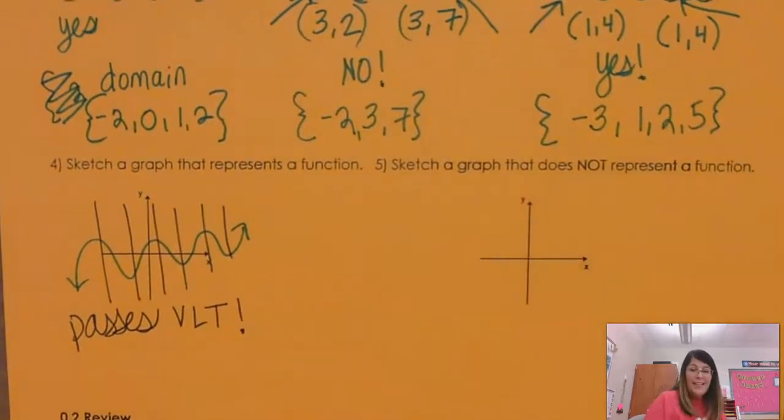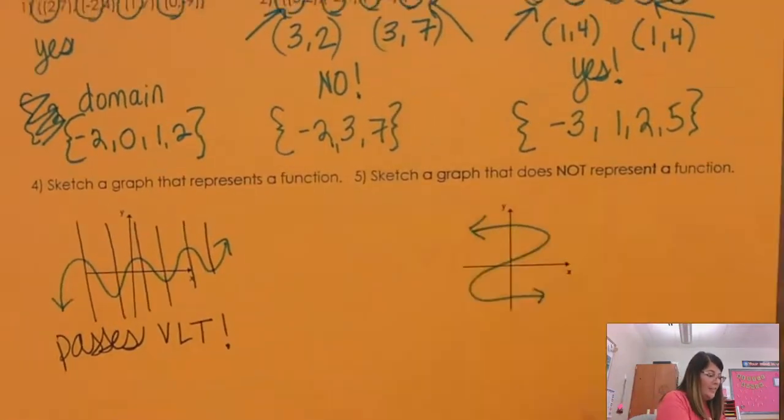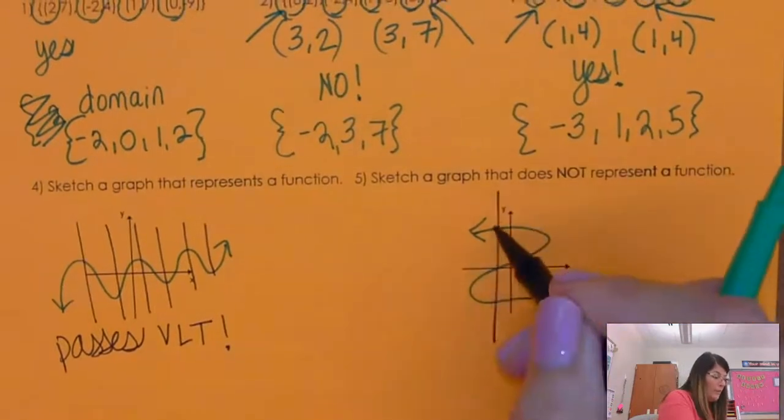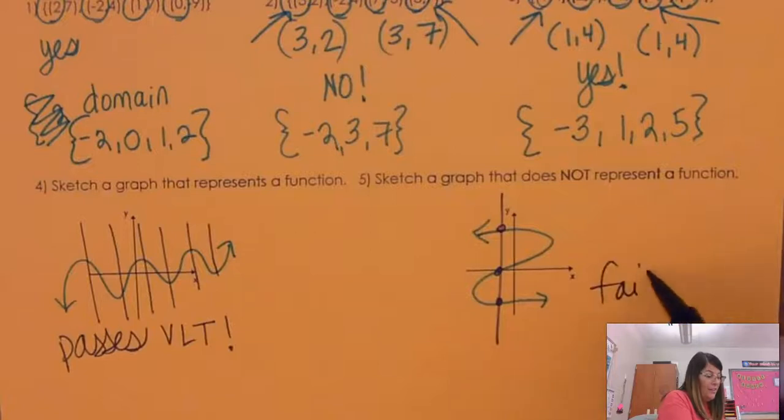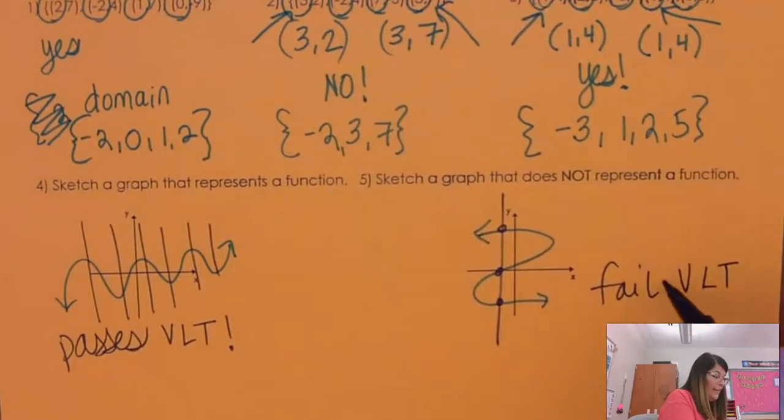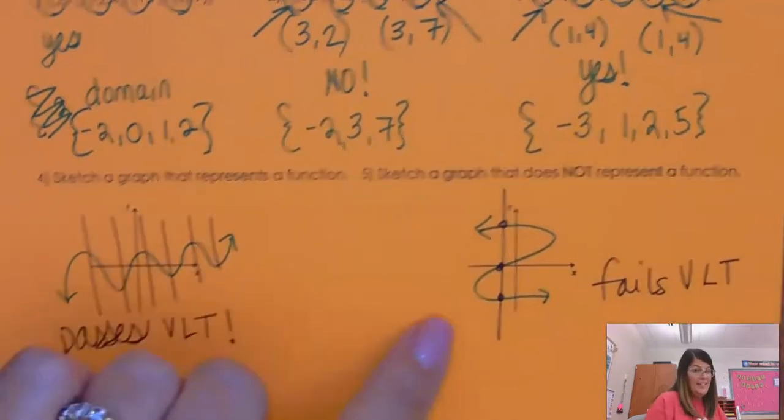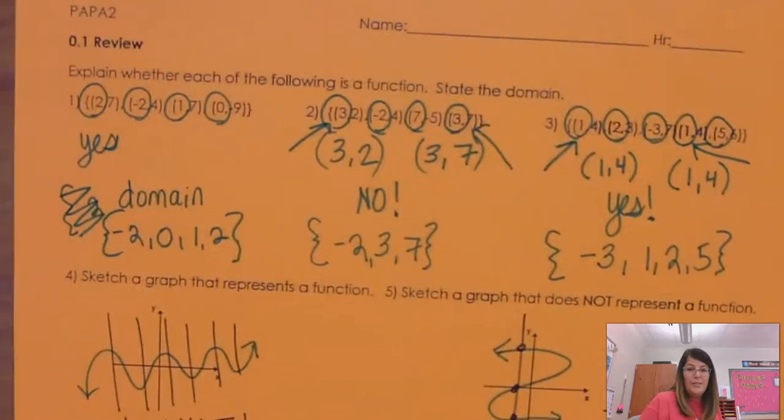Now, let's draw one that is not a function. So, when I draw a vertical line, it is going to hit this graph more than once. So, the fact that it hits this makes this fail the vertical line test. So, when it fails the vertical line test, then it is not a function. Okay. I hope this has helped you if you had any struggles with 0.1.